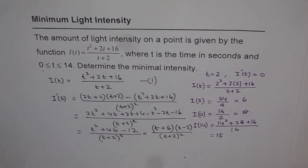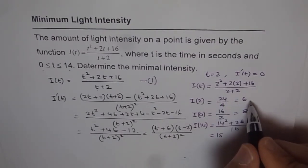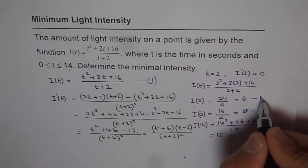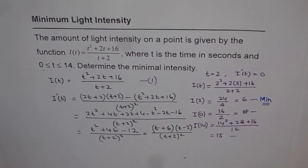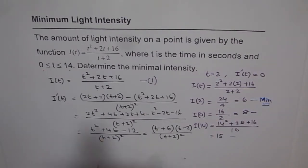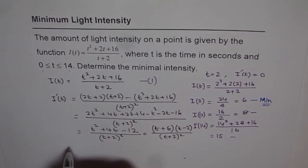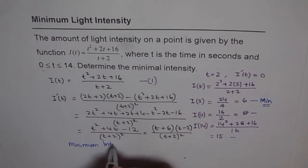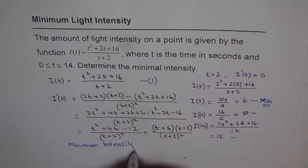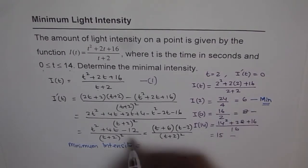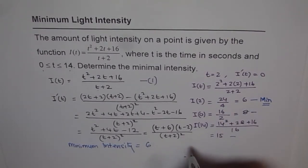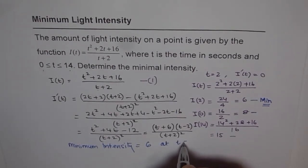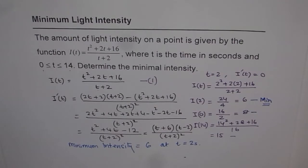Now if you compare all these three values, the intensity at 2, at 0 and 14, you will find this is minimum. Do you see that? Minimum. And therefore, we have our answer right there. So, determine the minimum intensity. It happens, the minimum intensity is equals to 6 when at t equals to 2 seconds. So that is our answer for the time being. So that is how you are going to solve this question.